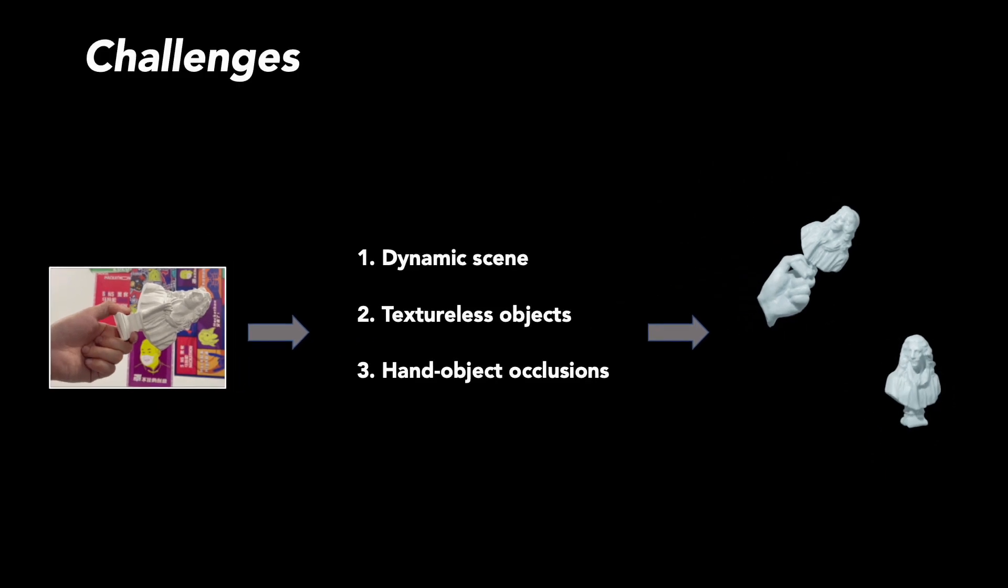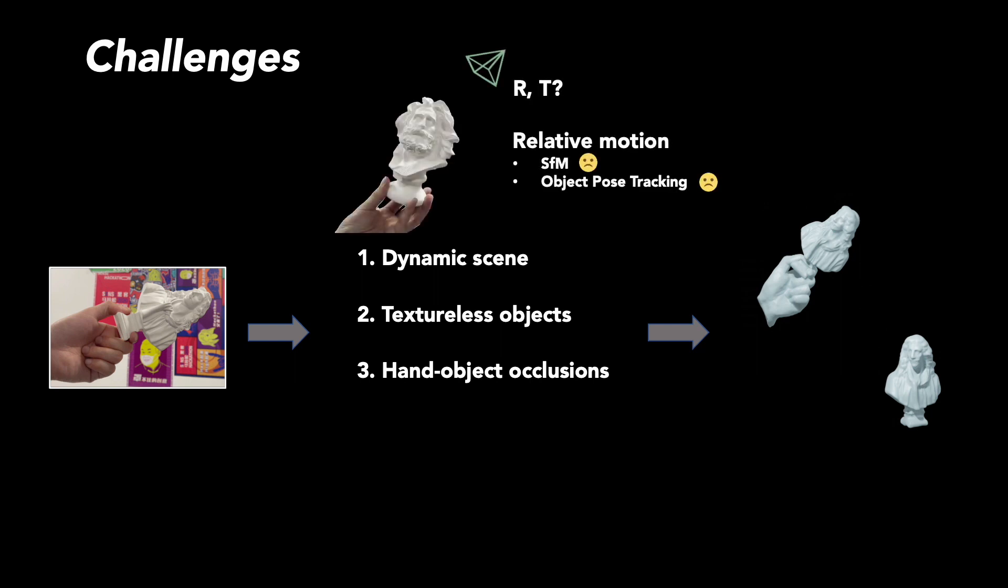This problem has three challenges that make existing methods inapplicable: the dynamic hand object motion, the possible textureless objects, and heavy hand object occlusions. As a result, it is hard to estimate the relative motion between the object and camera using structure from motion or object pose tracking. Also, dense reconstruction of a textureless object from RGB images is a difficult problem.